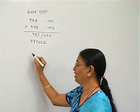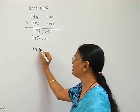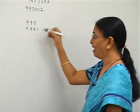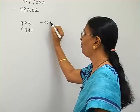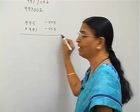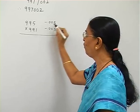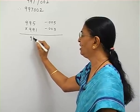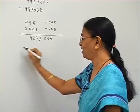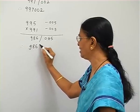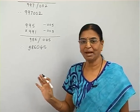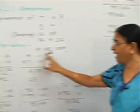One more example for base 1000: 995 into 991. The complement of 995 is minus 005 and of 991 is minus 009. Then 991 minus 5 gives 986, and 5 into 9 gives 045, so the multiplication gives 986045.